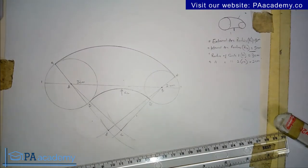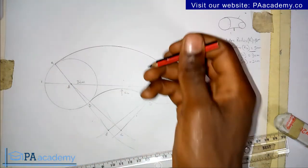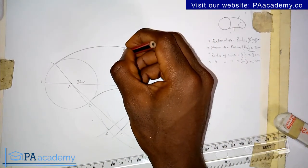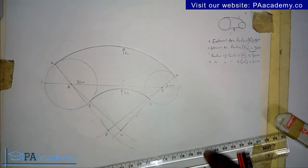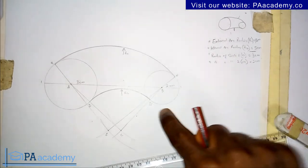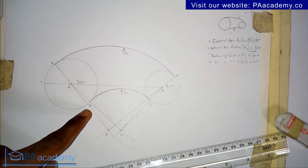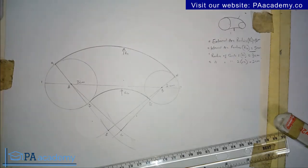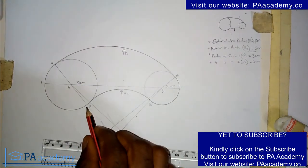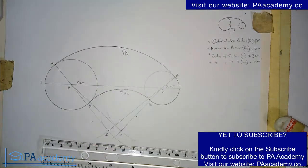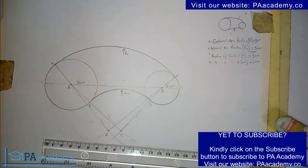Now I'll make the diagram bolder — from point H to point E, and from point D to point G — so the drawing stands out more clearly. This is how you go about drawing an internal and external arc of a given radius to two circles.